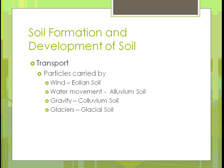Soils aren't just formed in place — they are moved by different methods. There are four ways soil particles move from one place to another. Wind can move soil, which is called eolian soil. If water moves it, it's called alluvium soil. If gravity moves it down a slope, it's called colluvium soil. And when glaciers melt and move away, dragging soil from one place to another, that's called glacial soil.